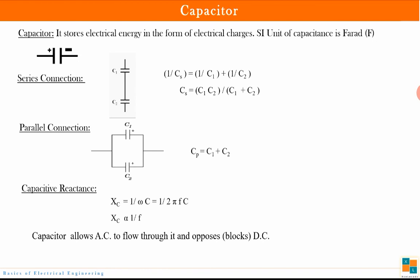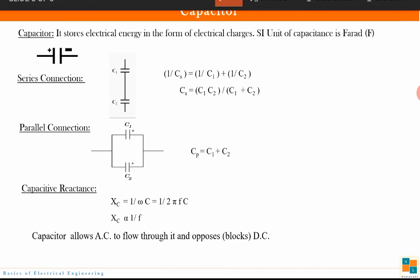Now let us see how a capacitor behaves. Basically, a capacitor is an element which stores electrical energy in the form of charges. The SI unit of capacitance is farad. The symbol and series and parallel connections are shown. Unlike inductors and resistors, for capacitors the equations are opposite: parallel combination is C1 + C2, and series combination is C1·C2 / (C1 + C2).